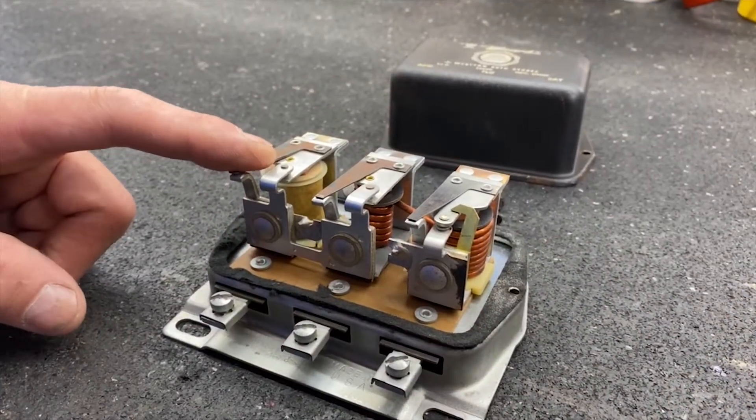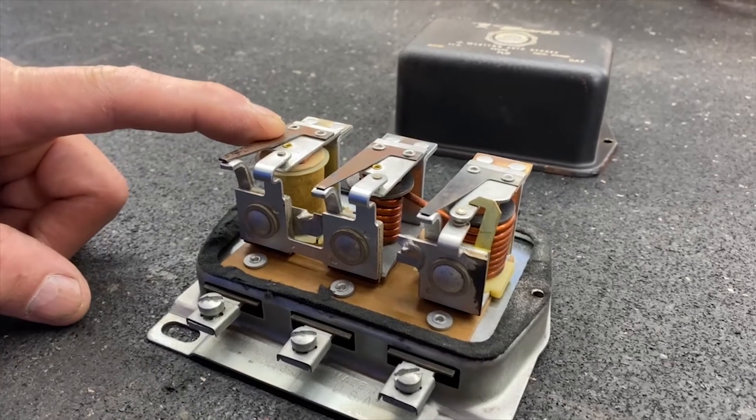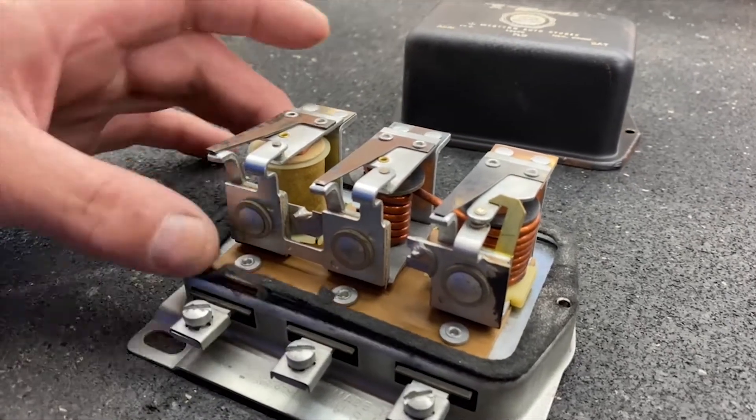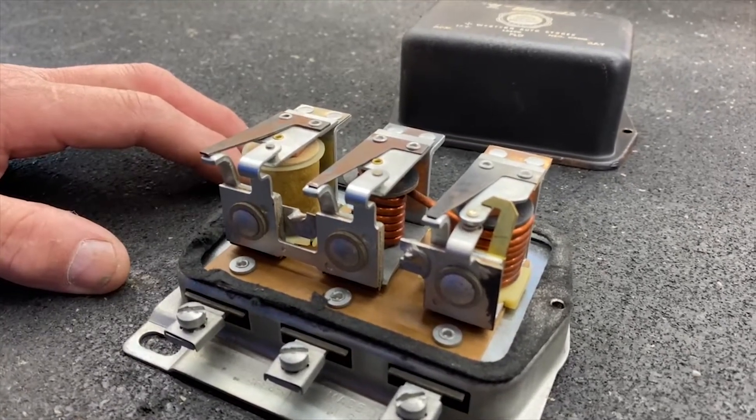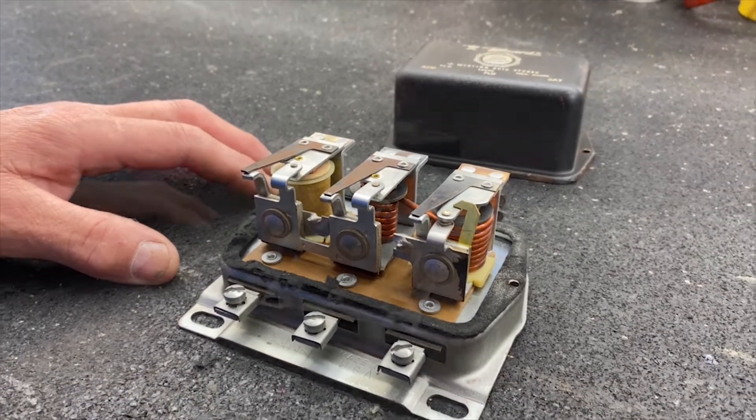Now we're going to go ahead and disassemble these coils and get this regulator cleaned up in a flat surface so we can install our electronic components and we'll test it and see what it looks like.